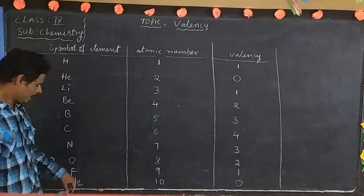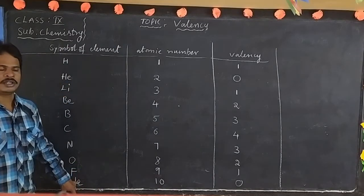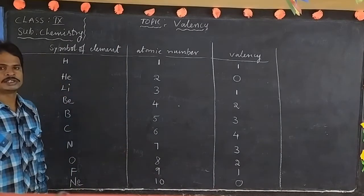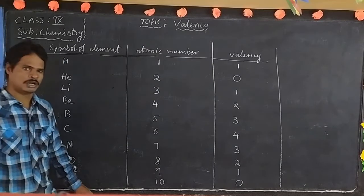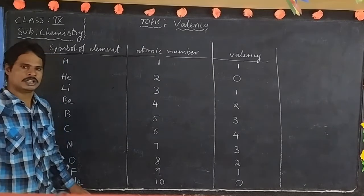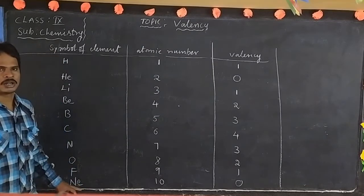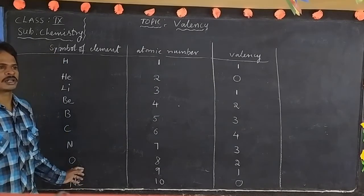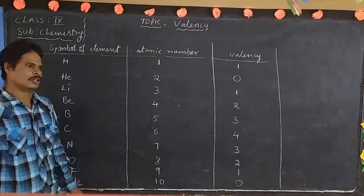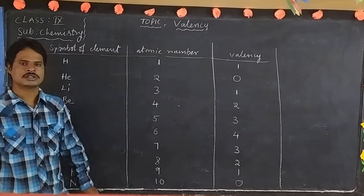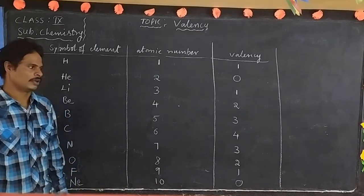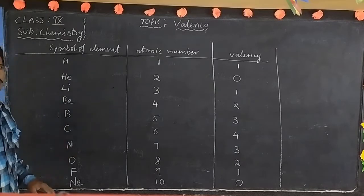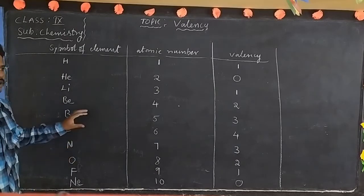Why does neon also have 0 valency? Neon is also a stable element — it does not lose electrons, does not gain electrons, does not combine with other elements. That is why it has 0 valency. This completes elements 1 to 10.